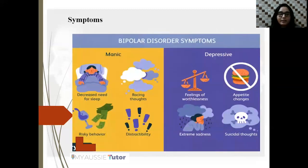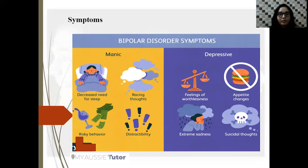Moving to the next slide, there are basically two types of symptoms: manic and depressive. The manic type is characterized by decreased need for sleep, racing thoughts, risky behavior, and distractibility. Risky behavior is very often observed among patients and can risk the life of individuals, so this needs to be identified by healthcare professionals.